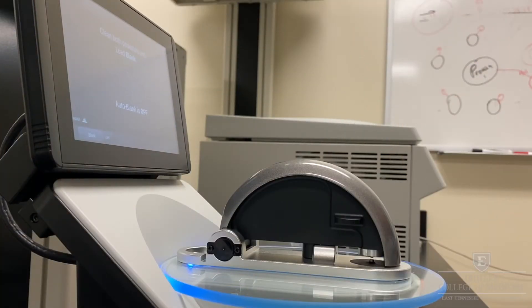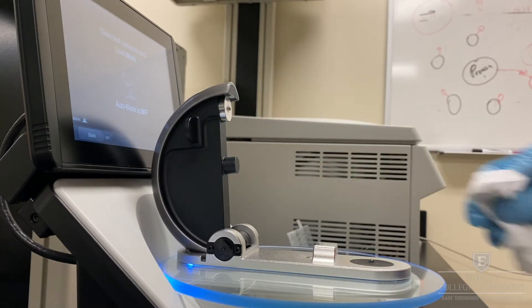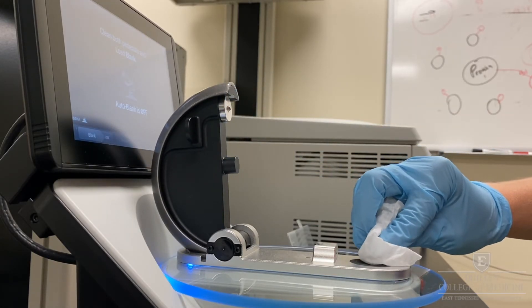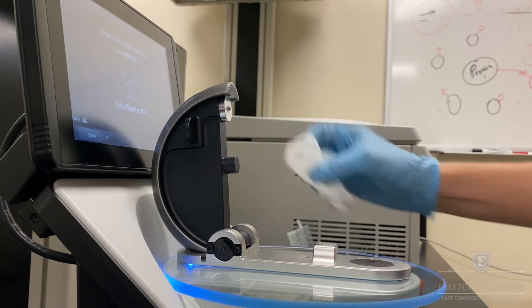To load a blank or sample onto the NanoDrop, begin by raising the NanoDrop arm. Using a dampened chem wipe, dab the lower and upper pedestal to clean away any prior sample.